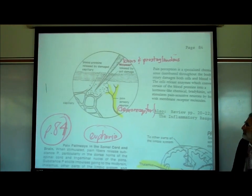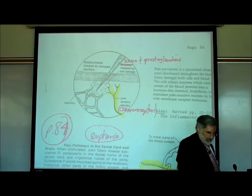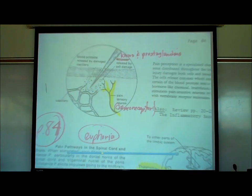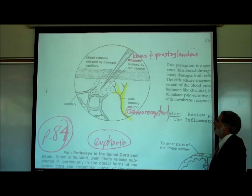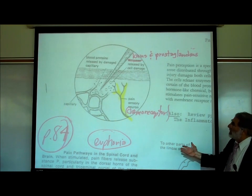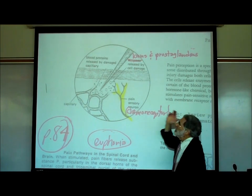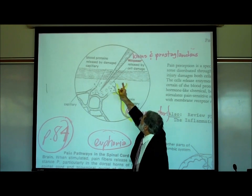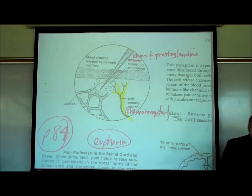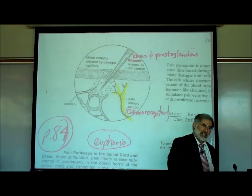On page 84, it shows a needle sticking into the skin. The needle is not necessarily sticking into the pain sensory neuron. What normally activates the pain sensory neuron are chemicals released from injured cells — kinins and prostaglandins. Pain sensory neurons are chemoreceptors; they are normally activated by chemicals released from injured cells.